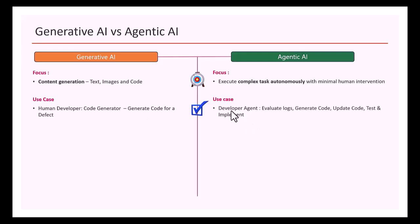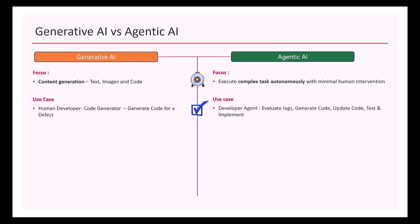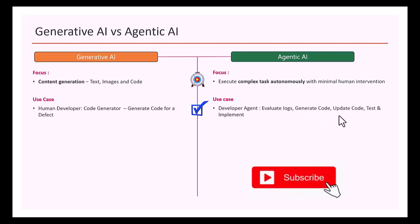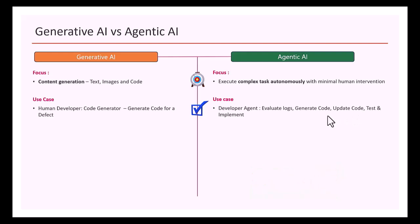Now let's take the same use case with agentic AI. Here you build a developer agent that requires minimal human intervention. The developer agent evaluates the logs, understands the defect, generates code, updates it, tests it, and implements it — all by itself. You can keep a human in the loop at the end: once the code has been generated, updated, and tested, a human reviews it just before final implementation.